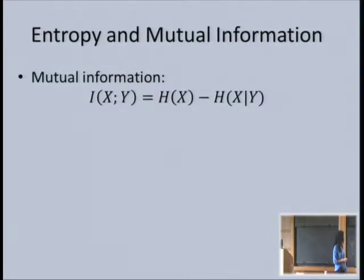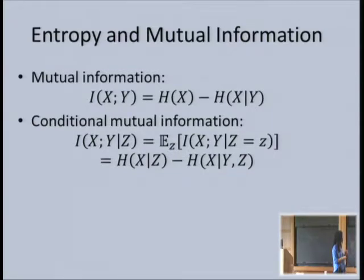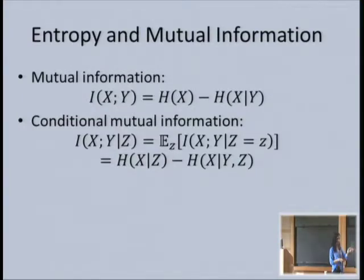Mutual information between two variables is a symmetric notion—how much uncertainty I lose when I reveal one of the variables. It's the original entropy of X minus the new entropy after revealing Y. This is symmetric: you could also write H(Y) minus H(Y|X). By analogy, we can define conditional mutual information as the expectation over the value conditioned on, equal to the conditional entropy minus the conditional entropy after revealing V.